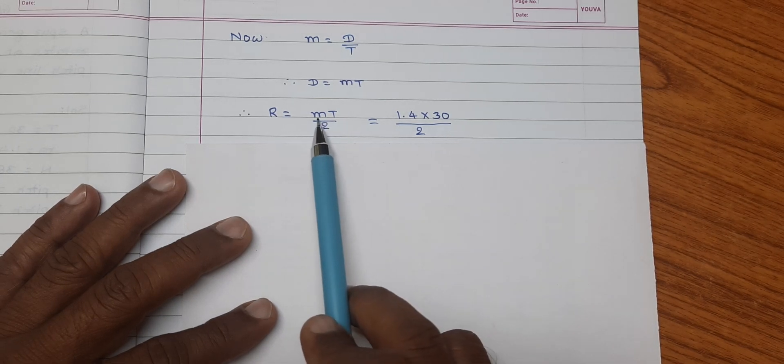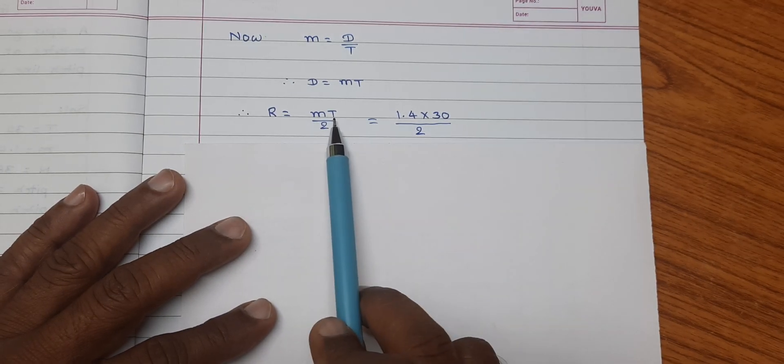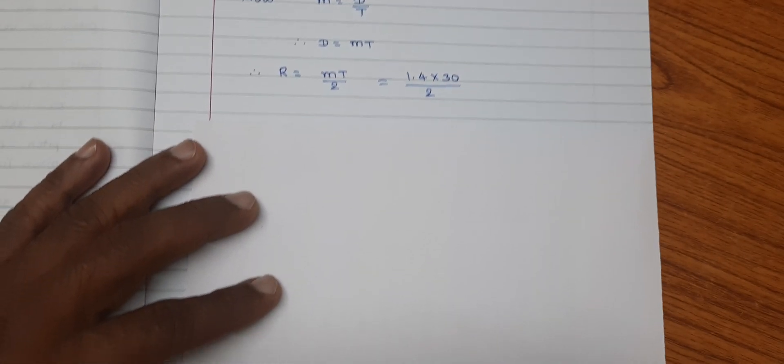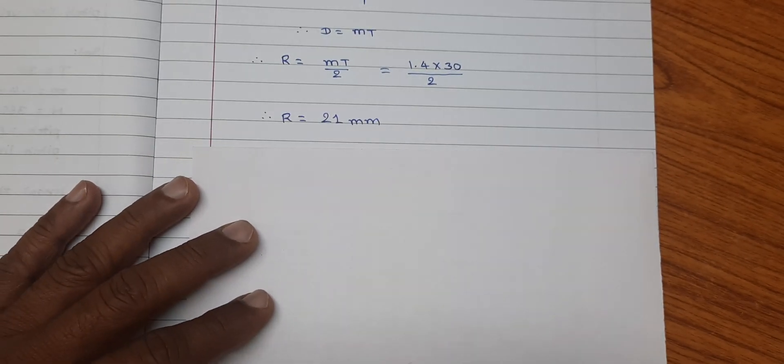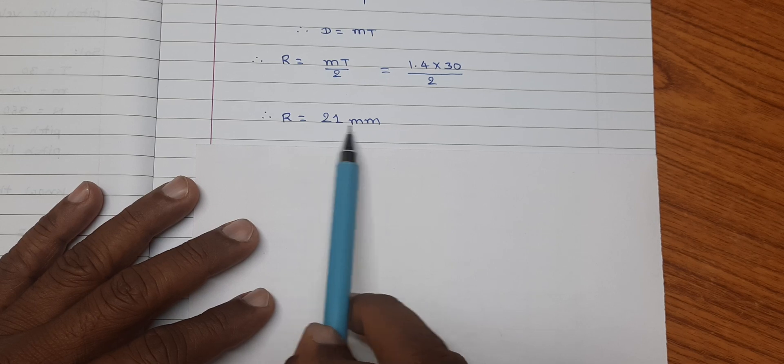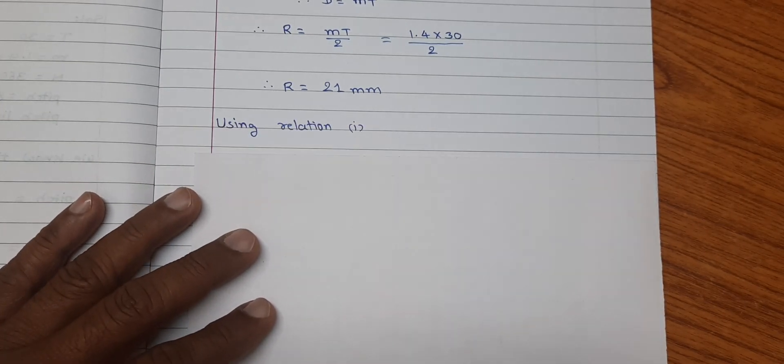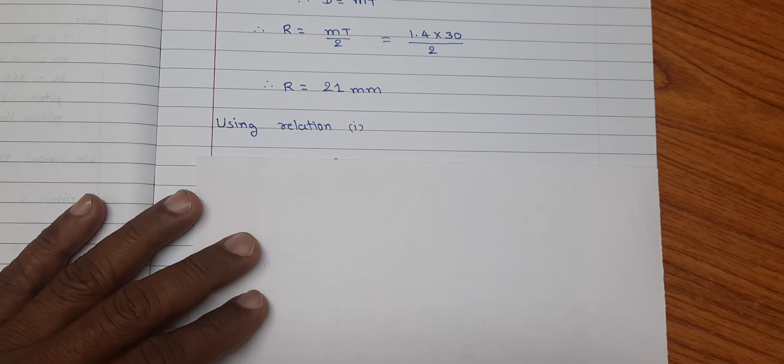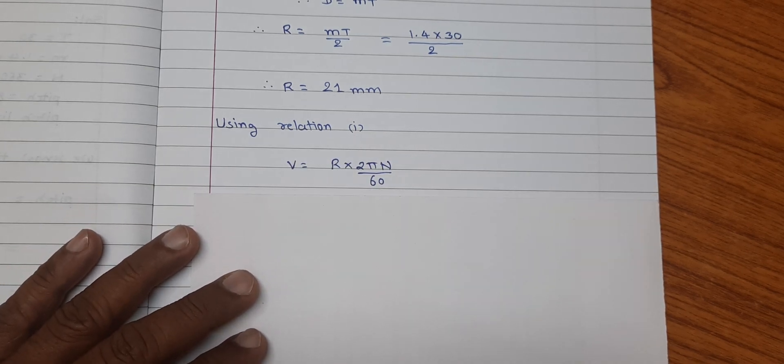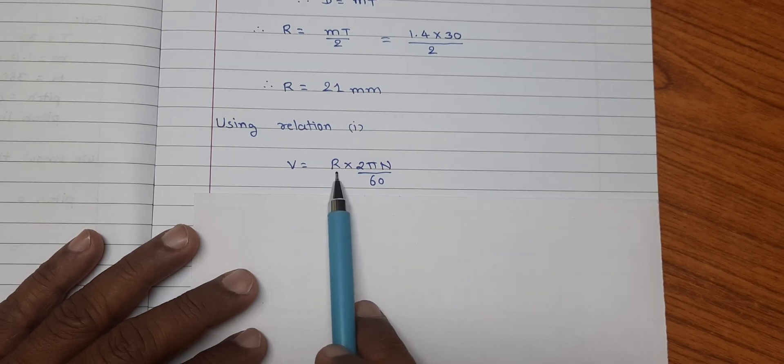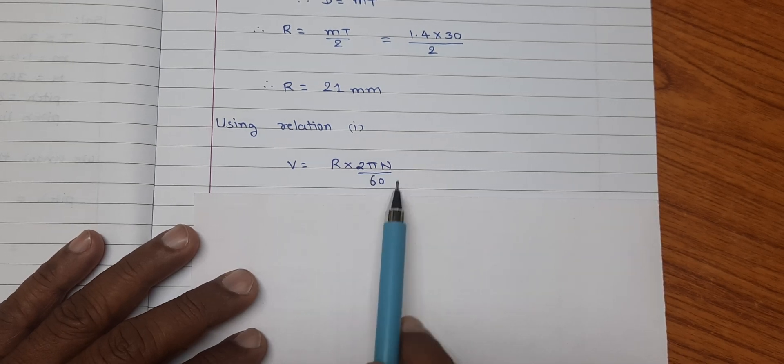Substituting the value of m 1.4 and t 30 divided by 2, that gives us on calculation r is equal to 21 mm. So substituting these values in relation 1, we found pitch line velocity v is equal to r into 2 pi n by 60.